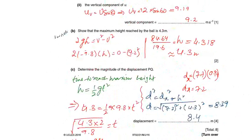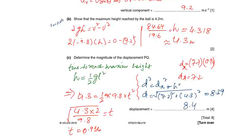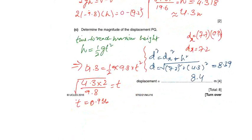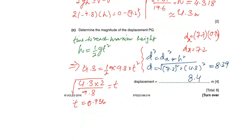We will use v equals u minus gt. So h is 4.3, which equals one-half times 9.8 times t squared. Solving gives t equals 0.936 seconds.